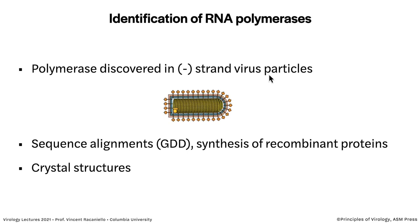Subsequently, an RNA polymerase was discovered in the virus particles of negative-strand RNA viruses. Baltimore reasoned that plus RNA viruses don't have to have a polymerase in the particle, but negative-strand ones do. He set out to look for it and found it in VSV. When we got the ability to sequence viral genes, we could see the sequences of these polymerases. There's a signature amino acid triplet GDD — glycine-aspartate-aspartate — which is a signature for the active site. We now have many crystal structures of these polymerases.